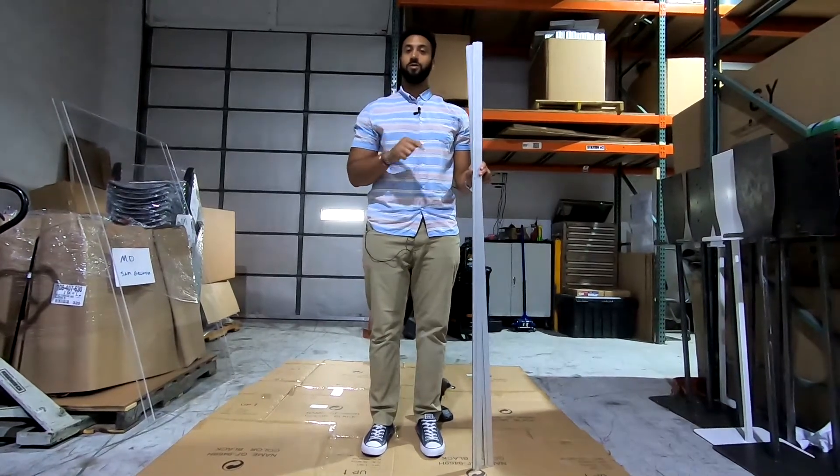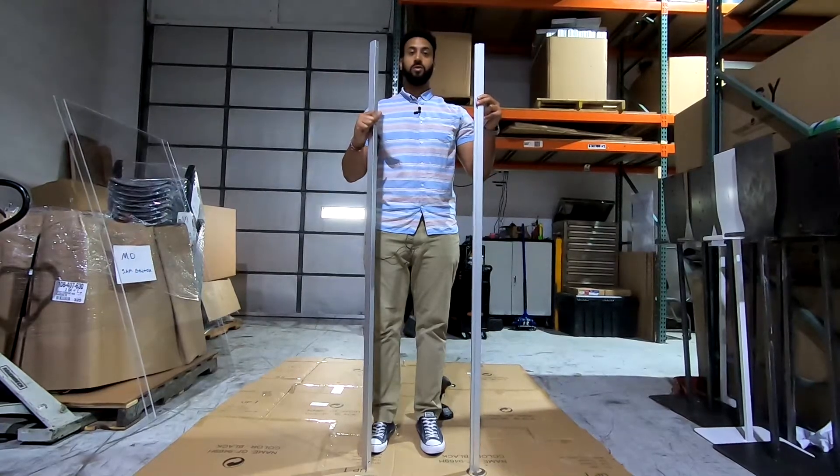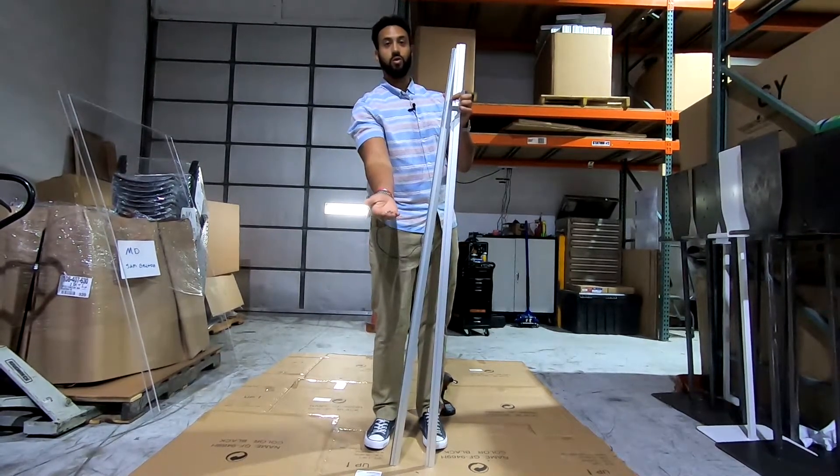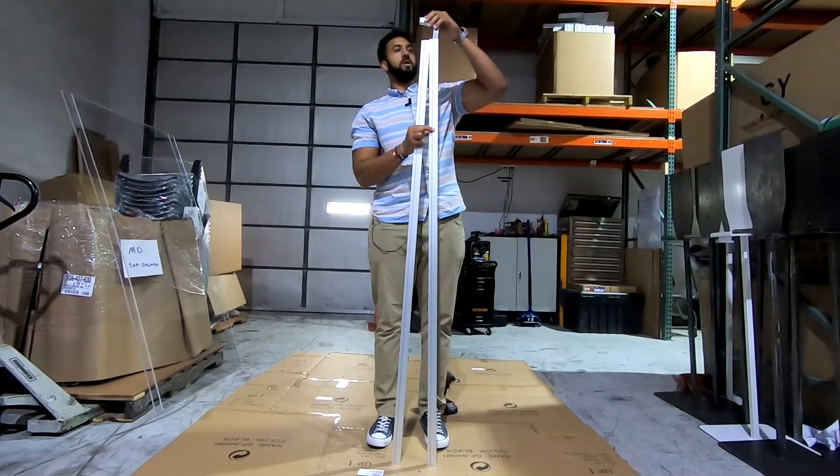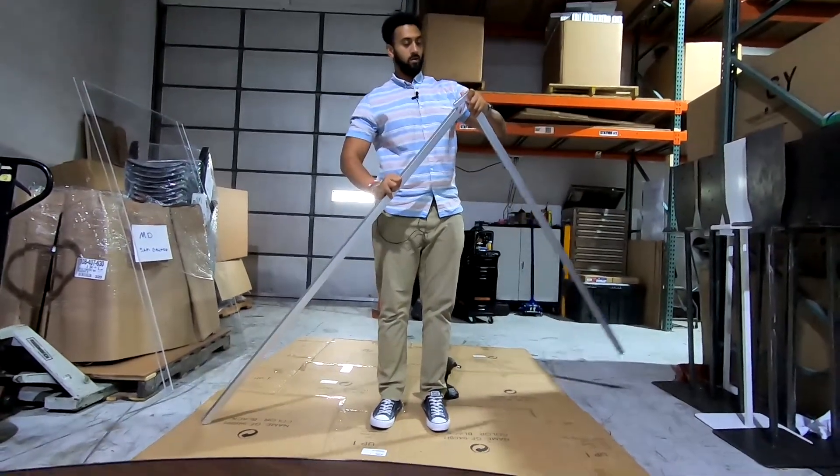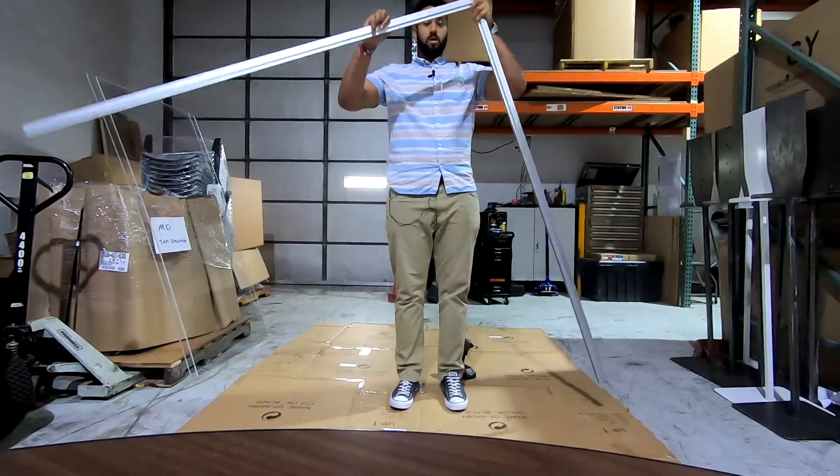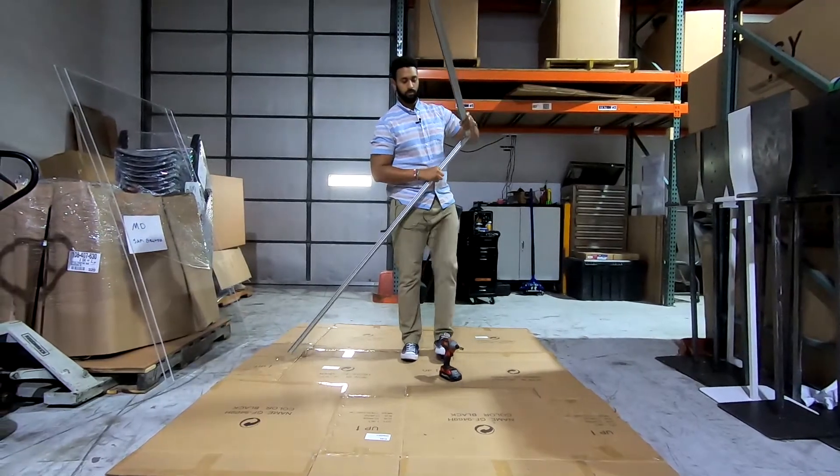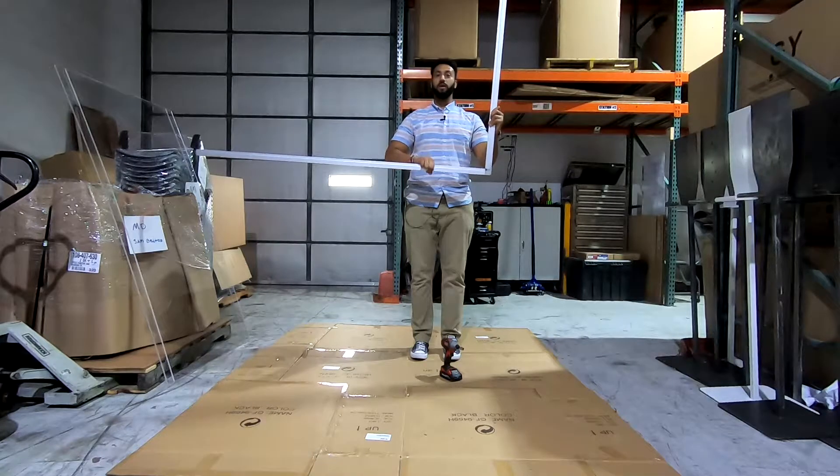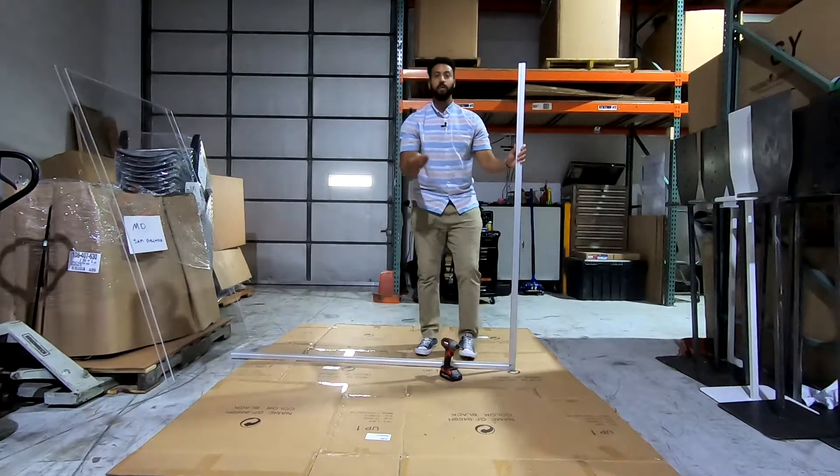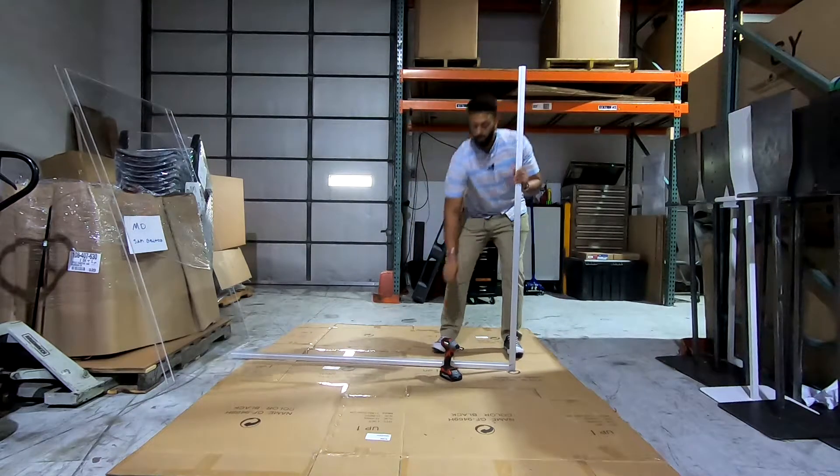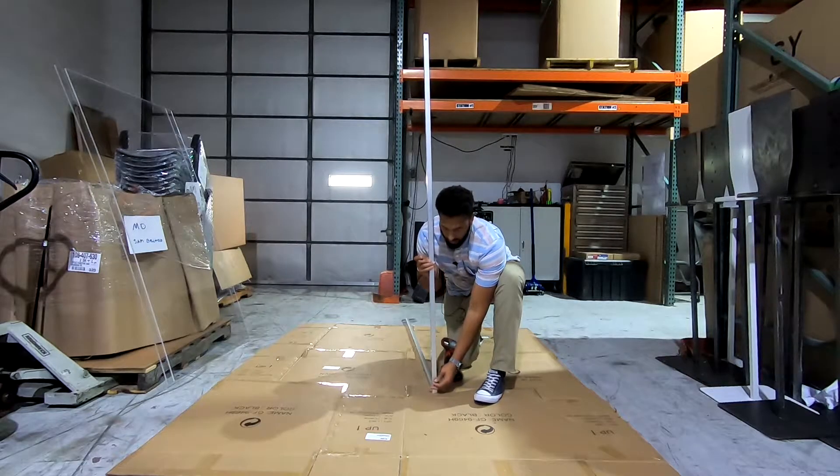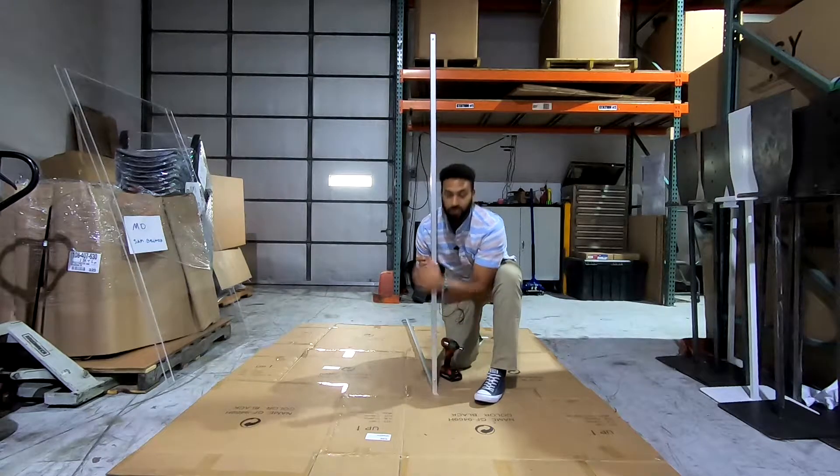The first step to creating your mobile sneeze guard is taking two of the bracket frames, one L bracket, and two short bolts. Place an L bracket into each end of the frame making an L. Then you will take your two short screws, place them into the hole. You want to start it off just by screwing it in with your fingers to place a hole.